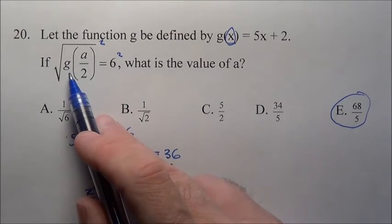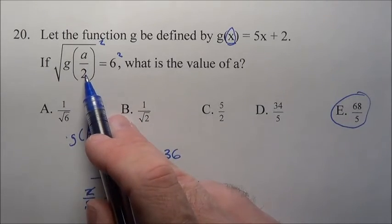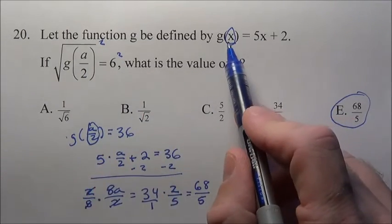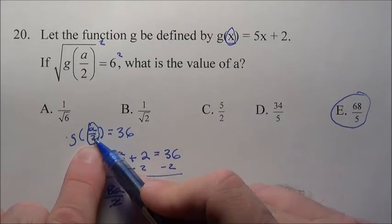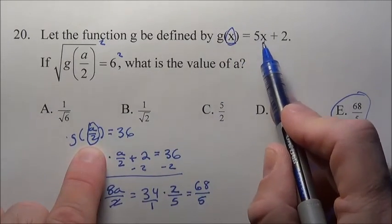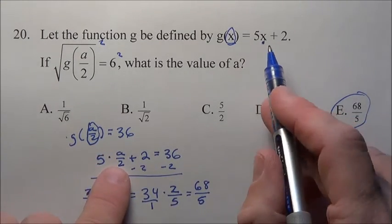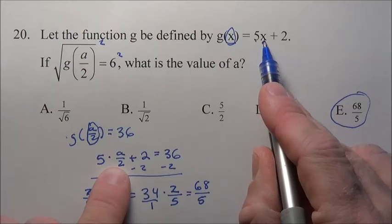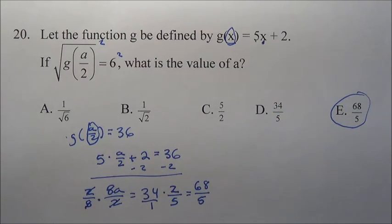The hard part is, as soon as you see this, square both sides and get g(a/2) equals 36, get that by itself, and then realize you've got to plug whatever you have right in here. That gets substituted in wherever there's an x. We replaced that a/2 with that x, so we had 5 times a/2 plus 2 when you knew it equaled 36, and then solve the equation.